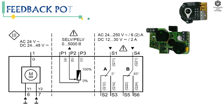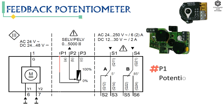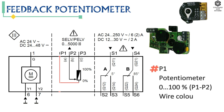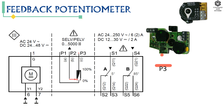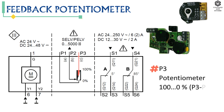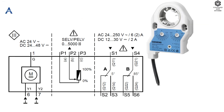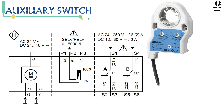Feedback potentiometer: terminal P1 is potentiometer 0 to 100 percent, wire color white and red. Terminal P2 is potentiometer pickoff, wire color white and blue. Terminal P3 is potentiometer 100 to 0 percent, wire color white and pink.